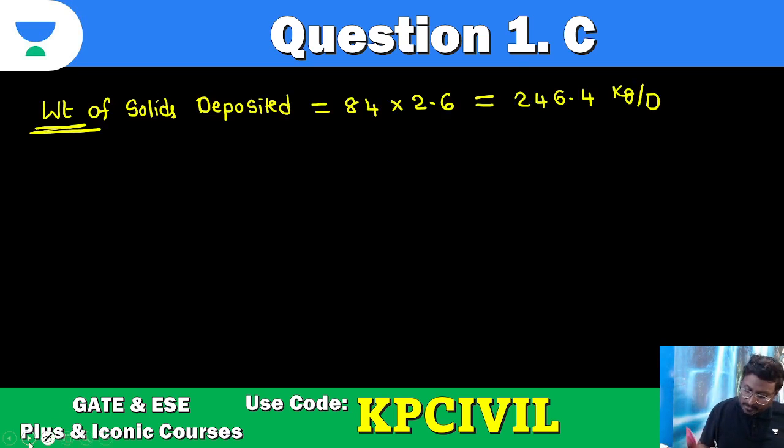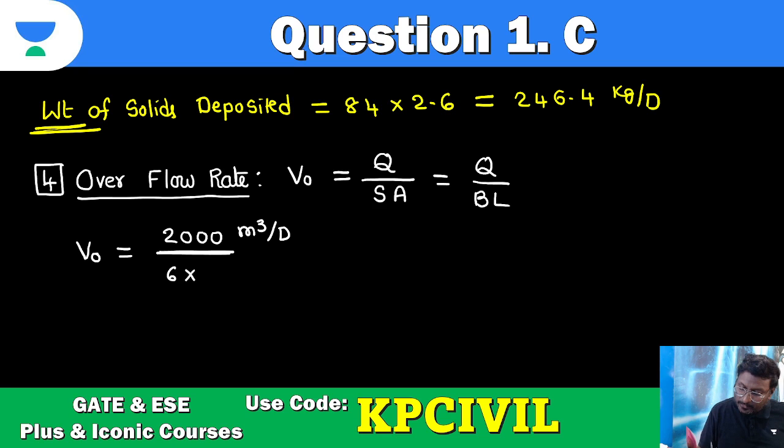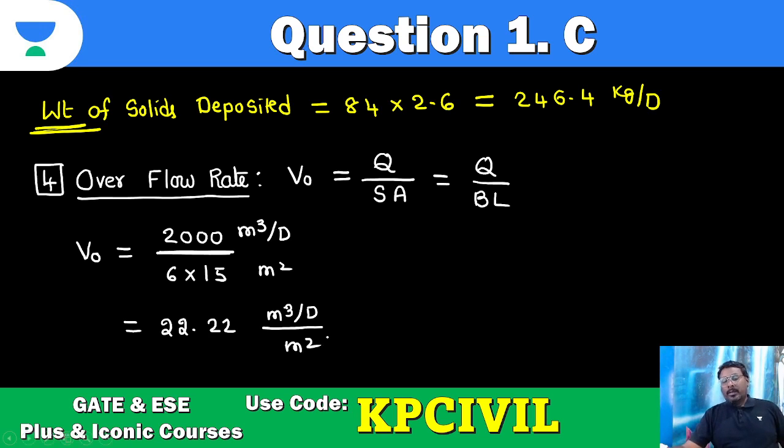Now we are moving towards overflow rate. Fourth one. Overflow rate. Overflow rate is nothing but V naught. V naught is equal to Q upon surface area, Q by BL. Q by BL. So Q 2000 meter cube per day. BL 6 into 15. So you will get 22.22 meter cube per day per meter square, which is nothing but meter per day.